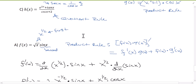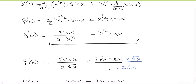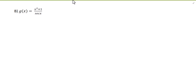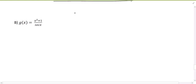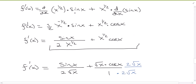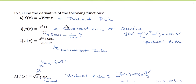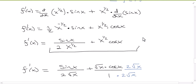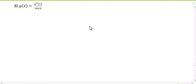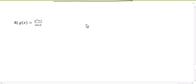Let's go to the second example, g(x) = (x² + 1) / sec(x). We had two options: leave it as is and use the quotient rule, or rewrite it — since secant is 1 over cosine — as (x² + 1)·cos(x) and use the product rule. Either way it should work out. So let me use the quotient rule first, and then do it both ways so you can see.